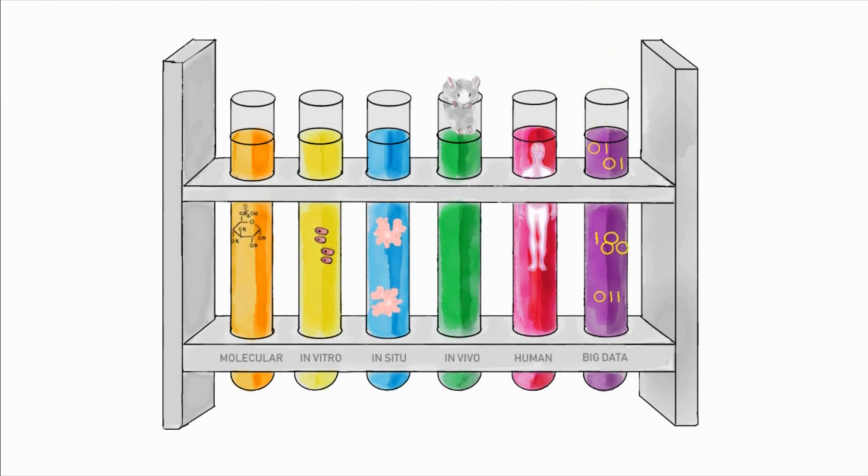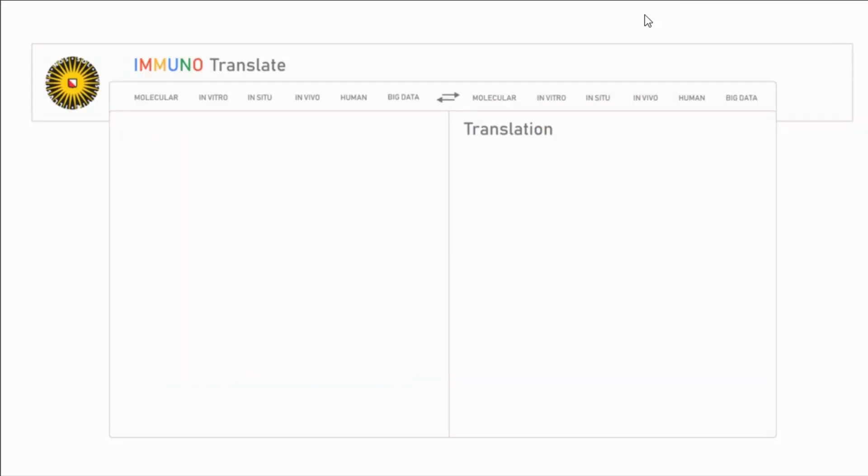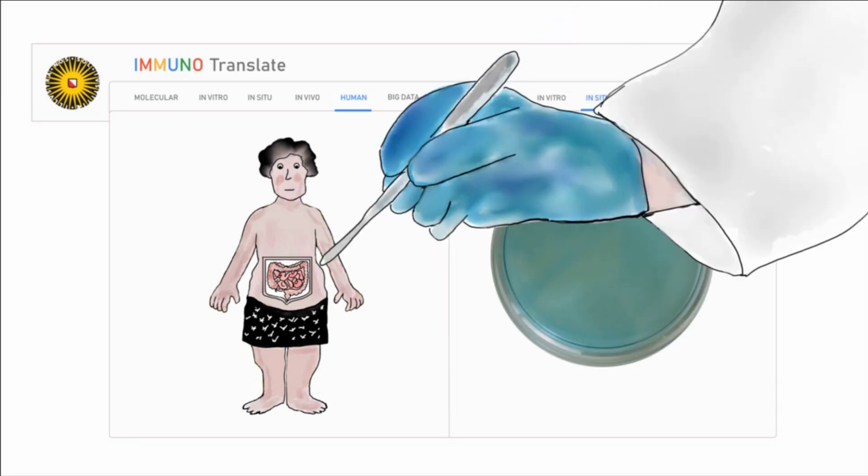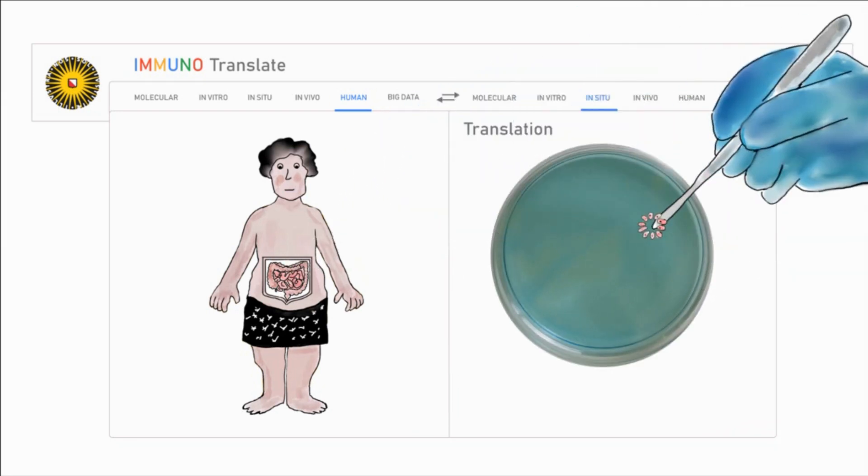To clearly visualize steps in the process of translational research, let's zoom into some examples. Here we see how human gastrointestinal cells are used to grow three-dimensional mini-guts in situ.